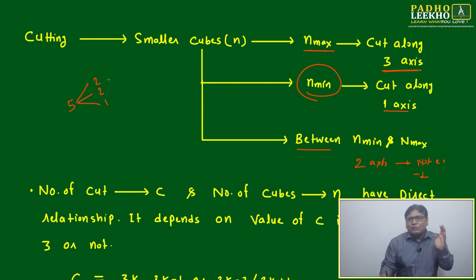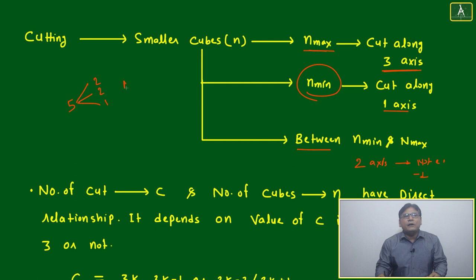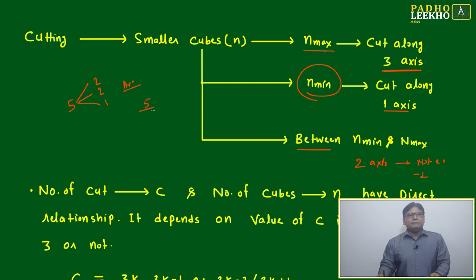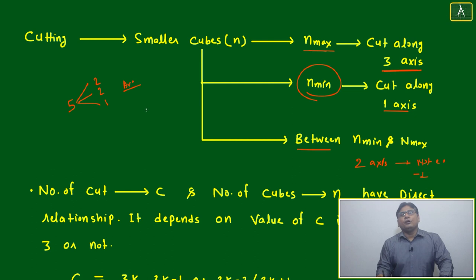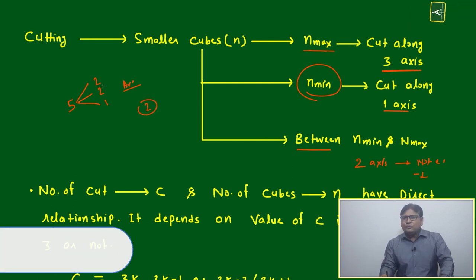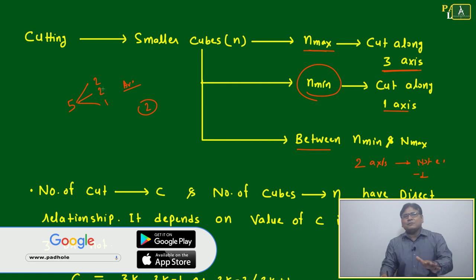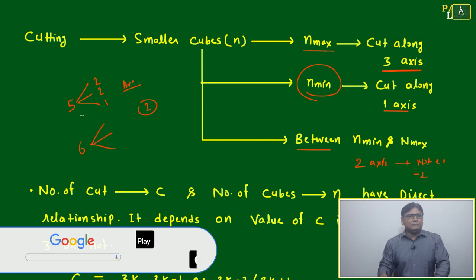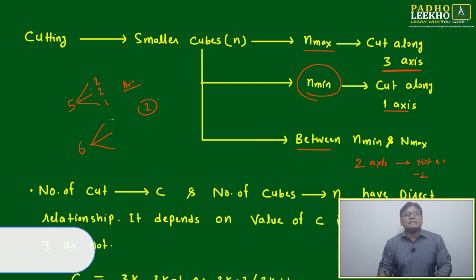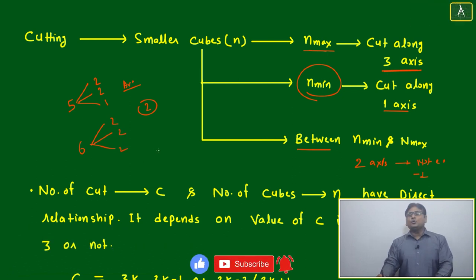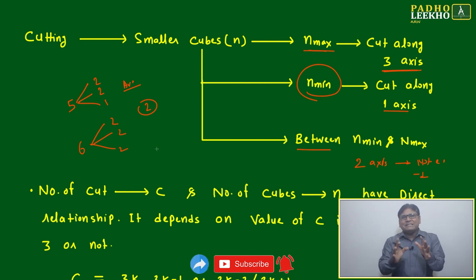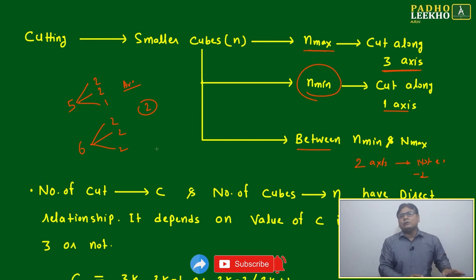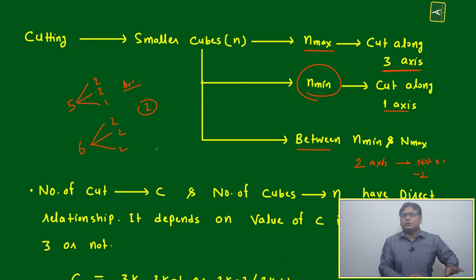With 5 cuts divided across 3 axes, the average is about 2 per axis, so try to keep each axis's cuts near 2. For 6 cuts divided by 3, the average is exactly 2 — so do 2-2-2. Simple visualization is all you need; no need to memorize complex formulas. If you can visualize it in your brain, the cube will never hurt you.